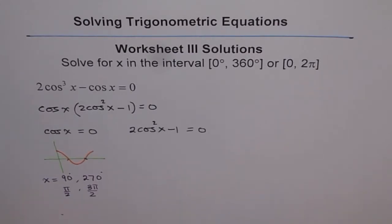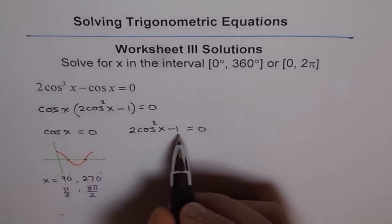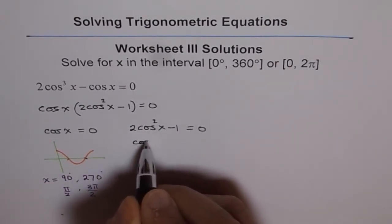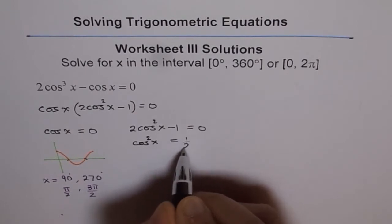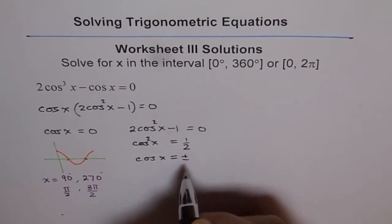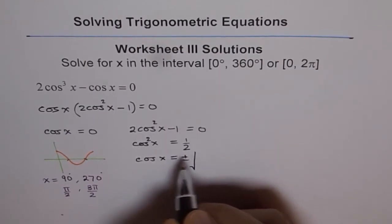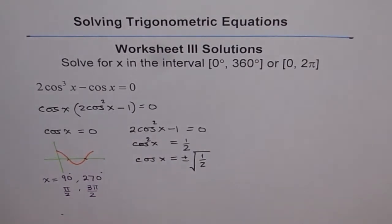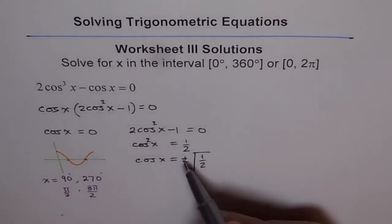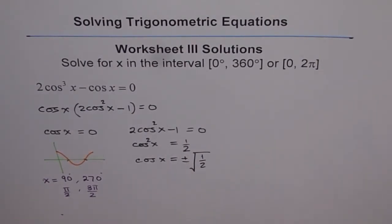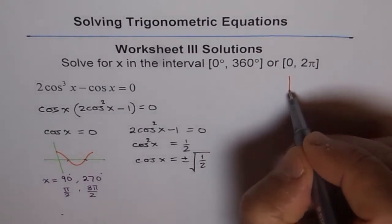For the second factor, 2 cos squared x minus 1 equals 0, it can be solved as cos squared x equals 1/2, or cos x equals plus or minus 1/√2. Don't forget to write plus or minus whenever you take a square root. Because cos x is plus and minus, this gives us four solutions, one in each quadrant.